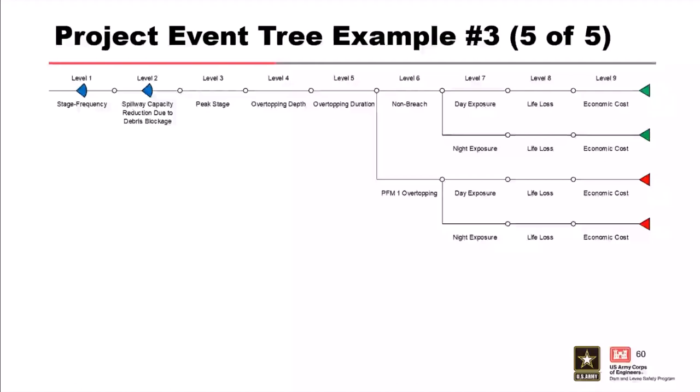A question was asked: if level six had multiple branches, could you collapse those additional nodes to clean up the visual? Yes, you could do that. However, in the current toolbox you can only have collapsed nodes at one level of the event tree—attempting collapsed nodes in two places will generate an error or warning. Regarding terminology: when we say 'types of functions,' we mean the types of variables represented by each level. System response probabilities are functions estimated using sub-event trees to calculate total project risk.